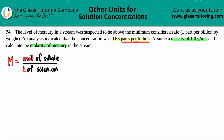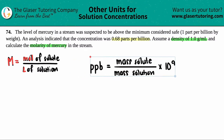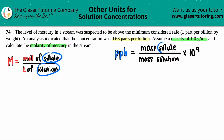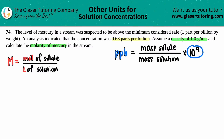Whenever I see parts per billion, I think of one formula. Parts per billion (ppb) equals the mass of the solute divided by the mass of the solution, times 10 to the 9th. Both molarity and ppb involve solute over solution — the units are just different.